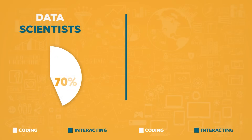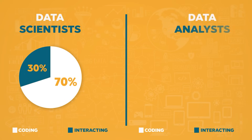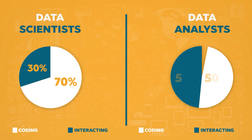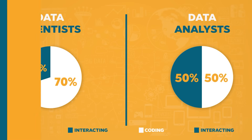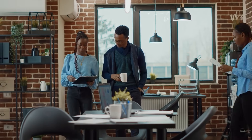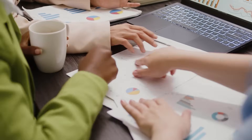Unlike data scientists that spend probably 70% of their time coding and doing IC work and maybe 30% talking to stakeholders, data analysts work probably falls more in that 50-50 range, where they're spending a lot more time actually interacting with people, gathering requirements, creating charts, and collaborating with stakeholders.